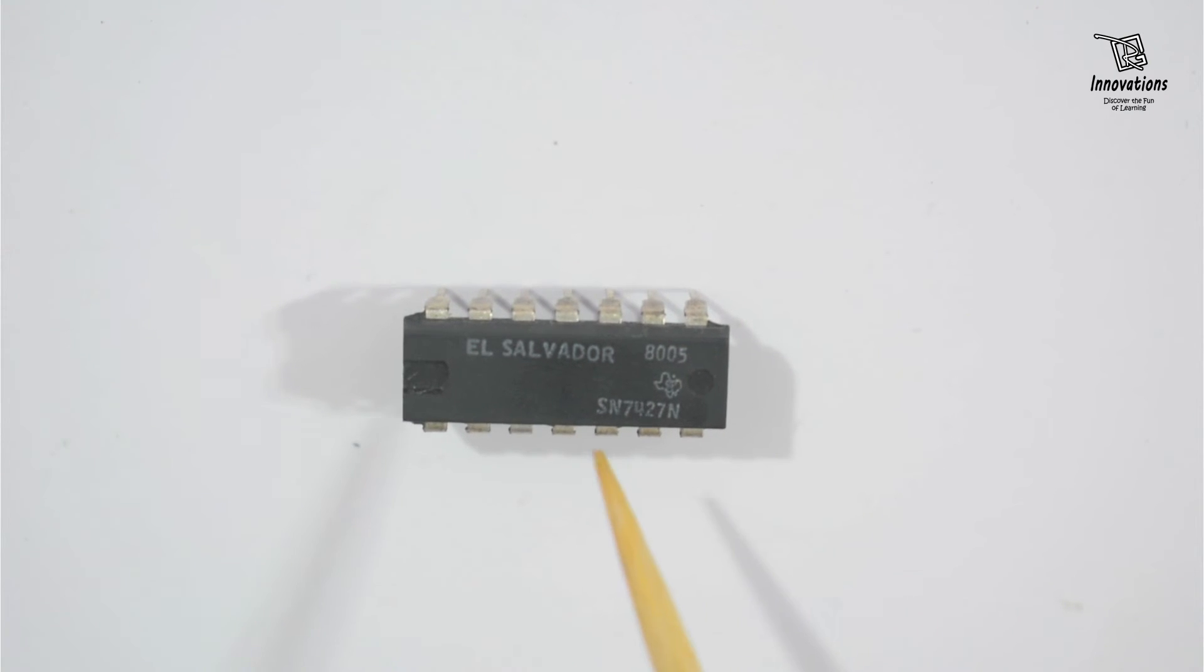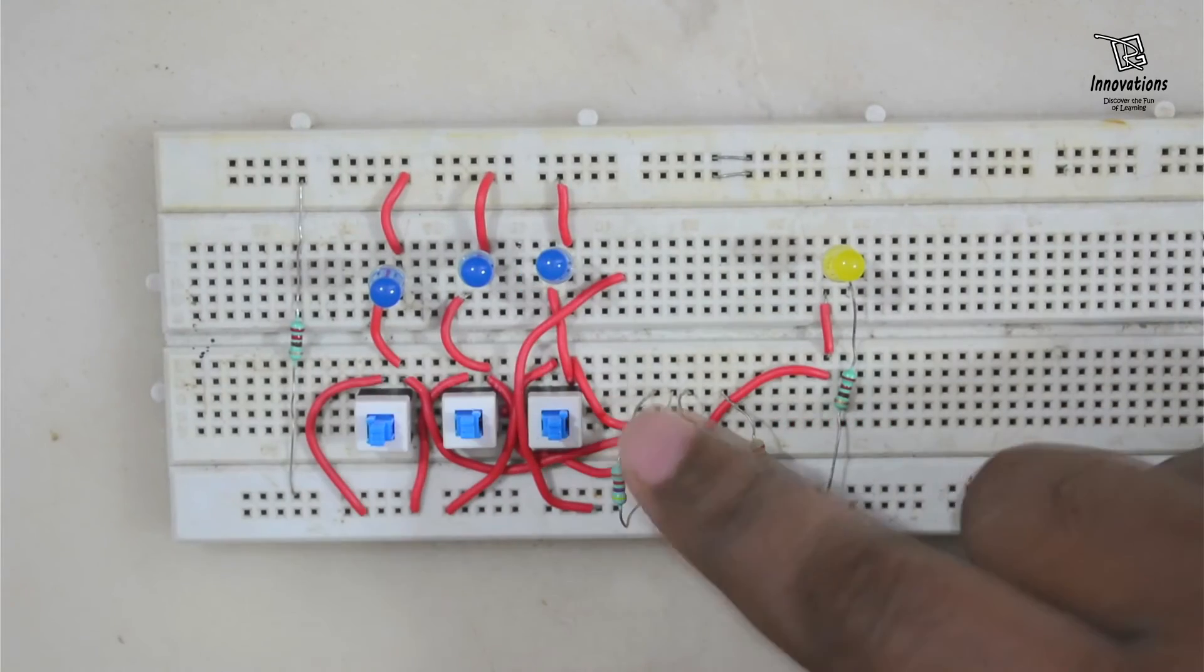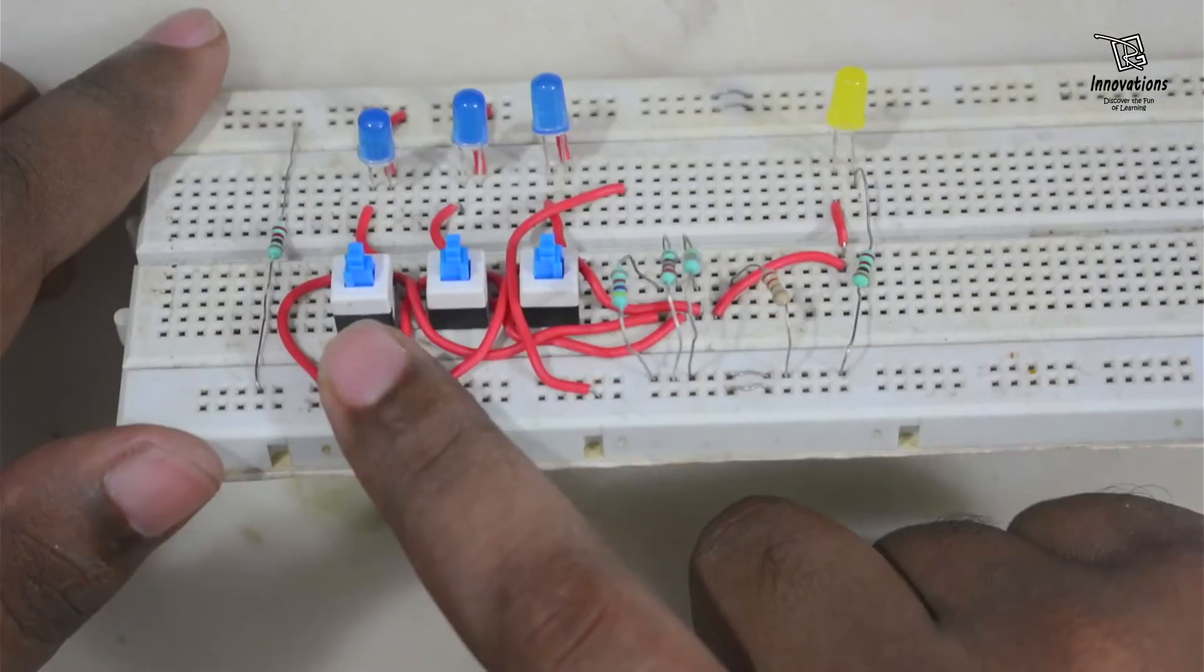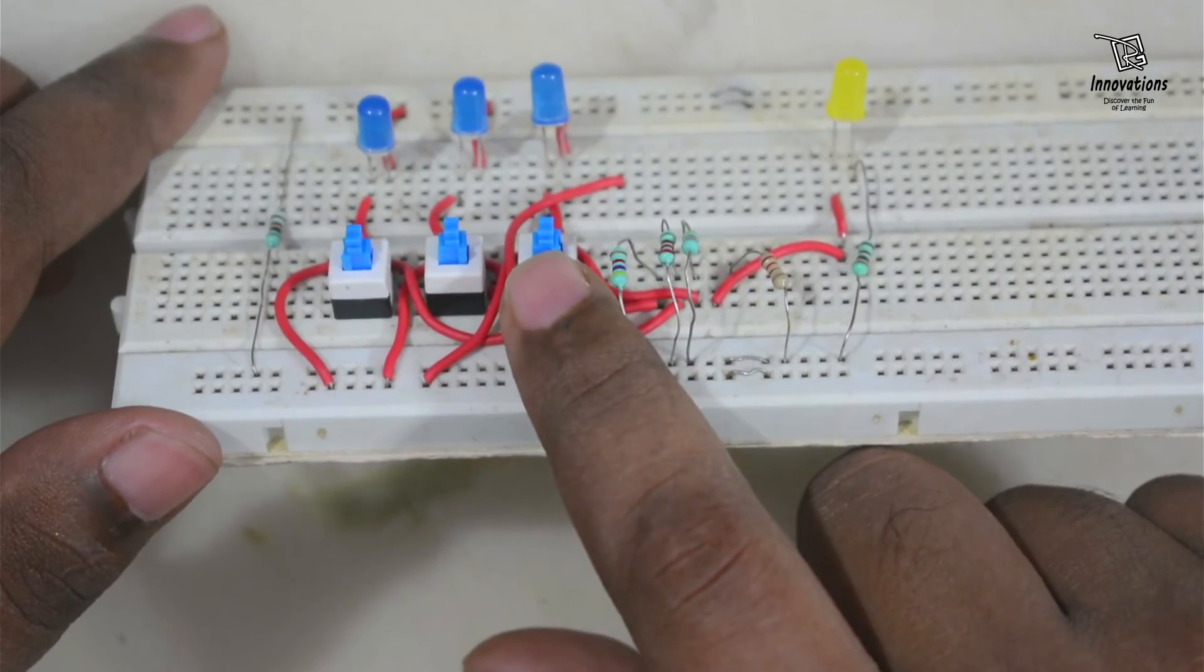The second segment of the NOR gates we will check. Now let us move on to the prototype that we have built based on the circuit I have shown. This is the prototype of the circuit and we have used three input switches here. These switches are currently in OFF position.